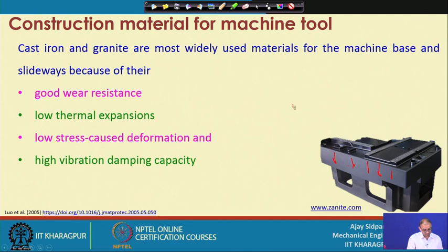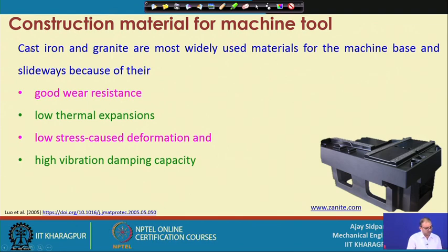These properties make cast iron and granite comfortable to use for different applications. However, some issues arise when using these materials for micro machining centers. For conventional machining where micron-level accuracy is not required, they are fine, but when machining parameters demand micron or sub-micron accuracy, material selection plays an important role in construction.